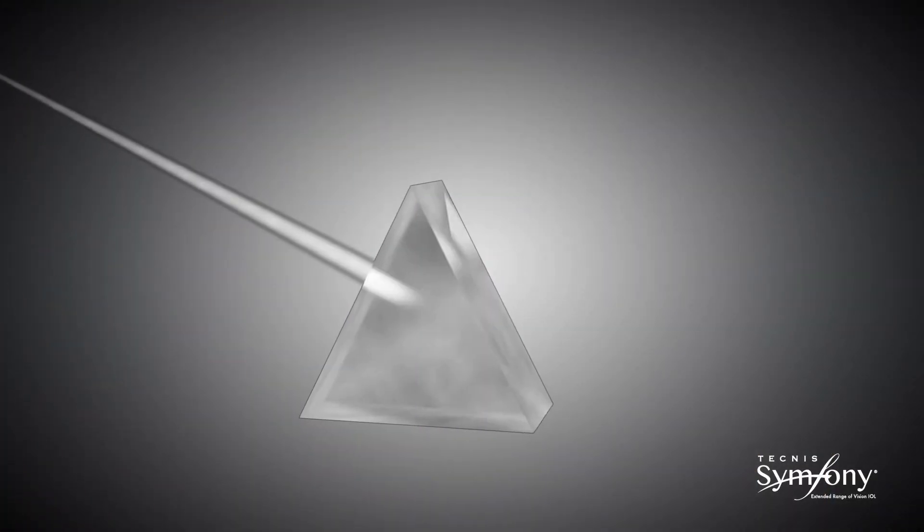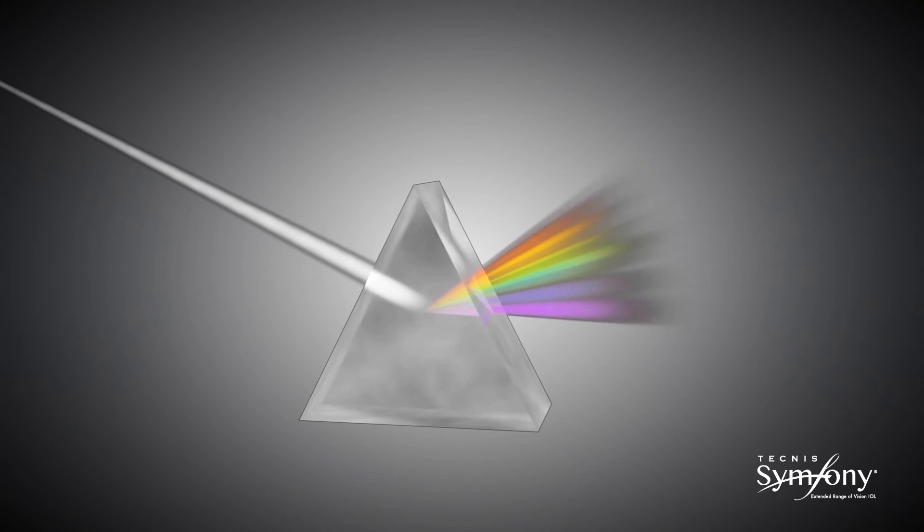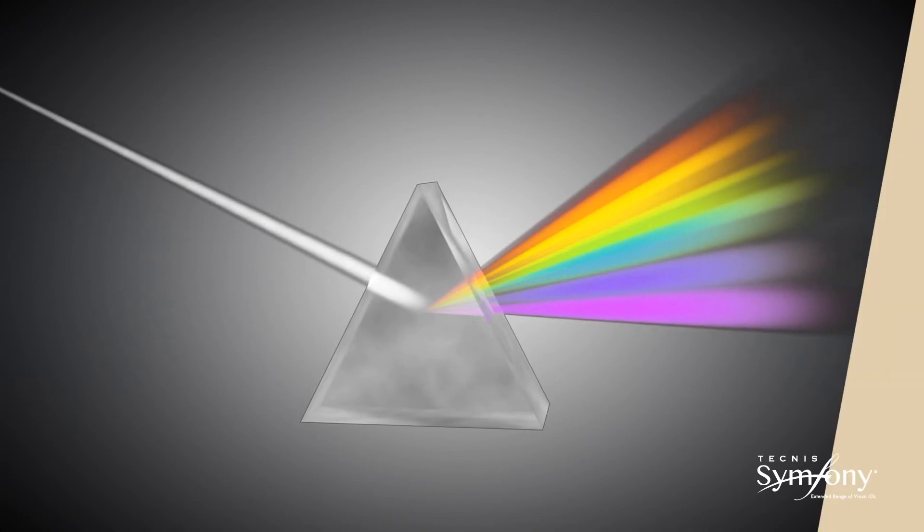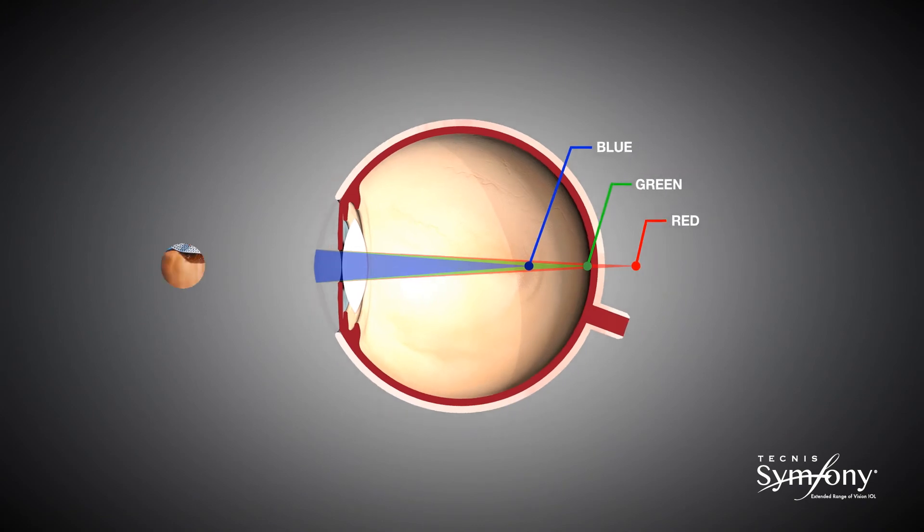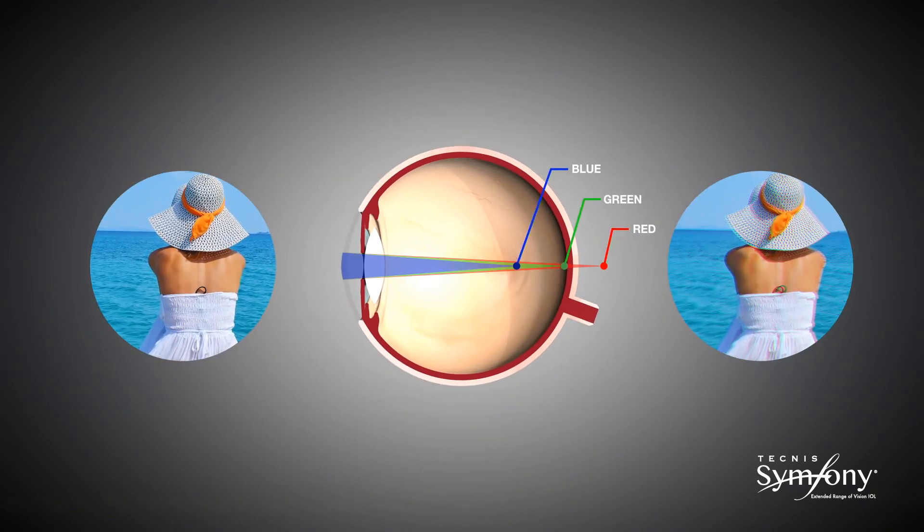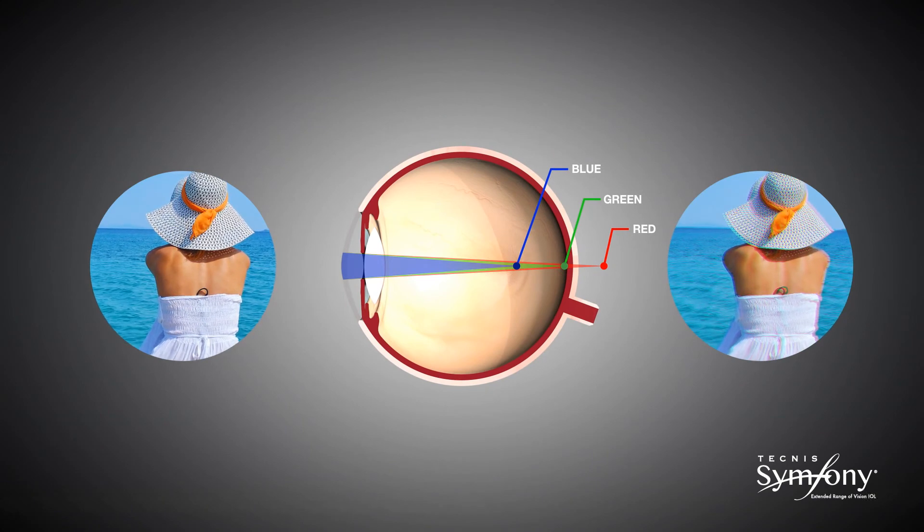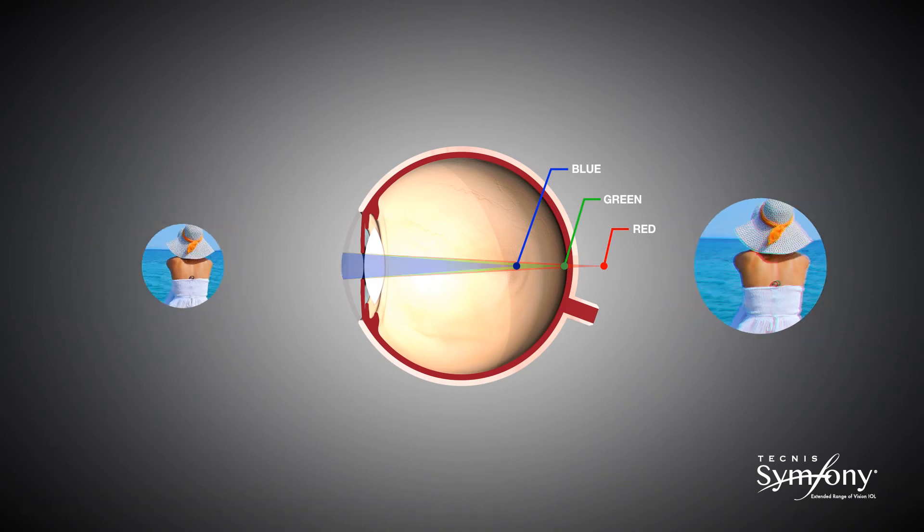Visible light is composed of a range of wavelengths that are red at one extreme and blue at the other. The cornea of the natural eye is a refractive lens, which is more powerful for blue light than red. The eye can only be in focus for one wavelength at a time. As such, the remaining wavelengths of visible light, which are out of focus, cause blur and a reduction in contrast vision. This is called chromatic aberration.